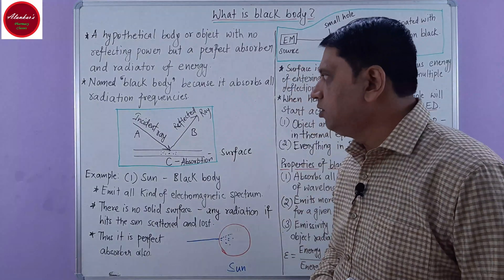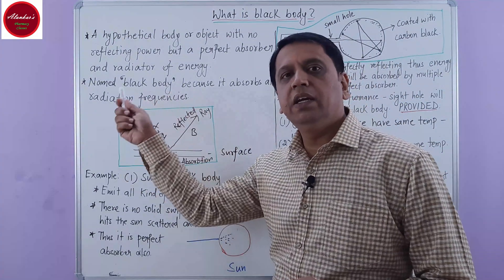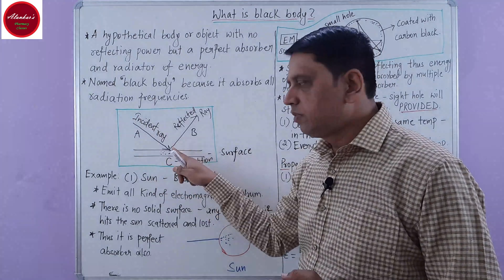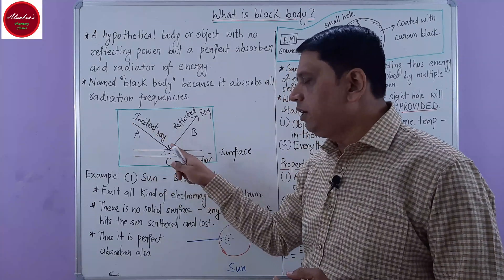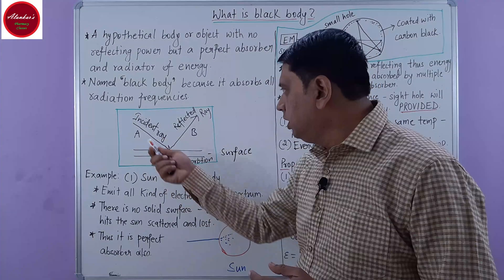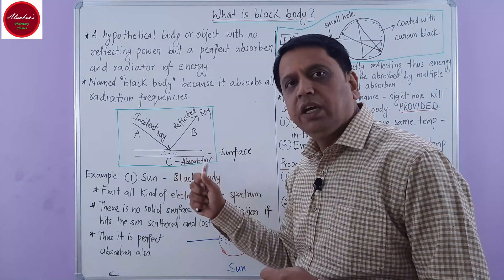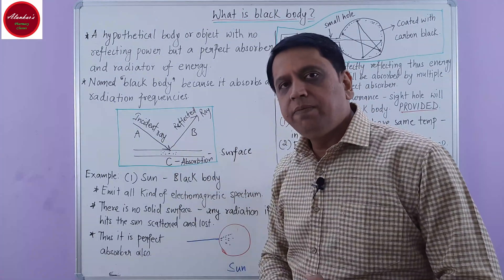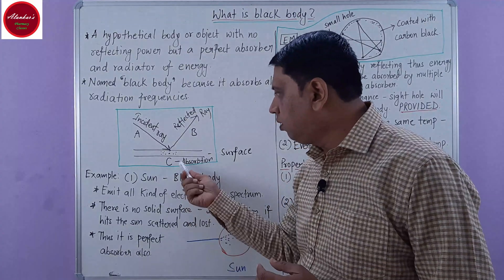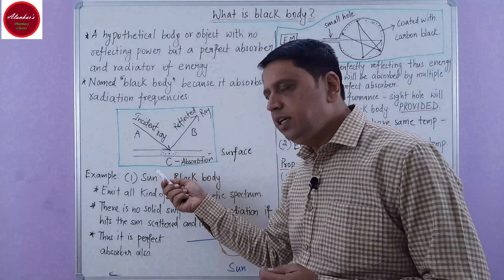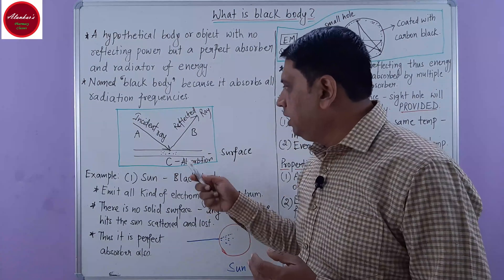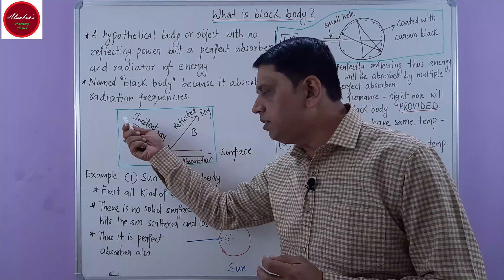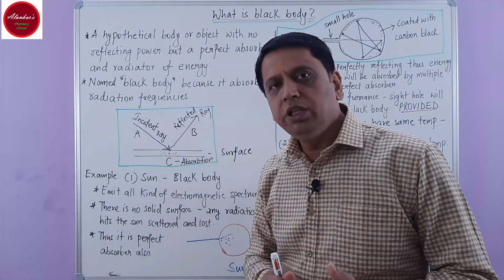You can better understand this definition by assuming an example represented here in the form of a picture. Assume there is any surface and here there is an incident ray — let's suppose this is point A. The incident ray, or it may be a kind of thermal energy, strikes over the surface of any hypothetical object. When it strikes the surface, some sort of this energy is absorbed, represented as point C, and there is a reflection of some energy that the surface receives through incident rays.